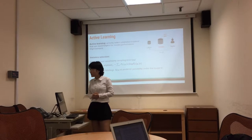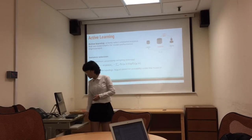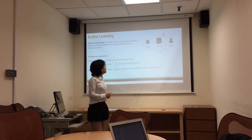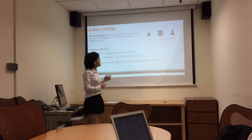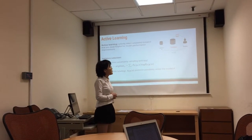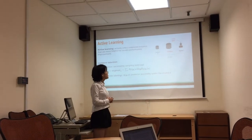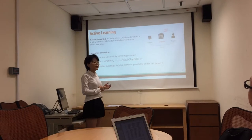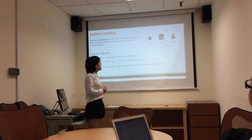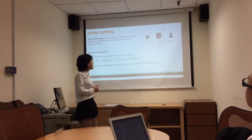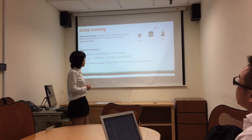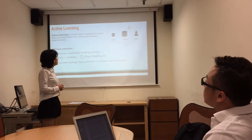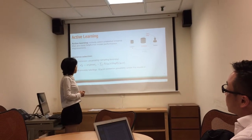The active learning process is shown as a graph here. You have a small labeled dataset and a large unlabeled dataset. Every time you query a label from a teacher for a chosen instance and add the instance and the queried label to the labeled set, then use the updated labeled set to train your objective classifier. The most important step in active learning is instance selection.